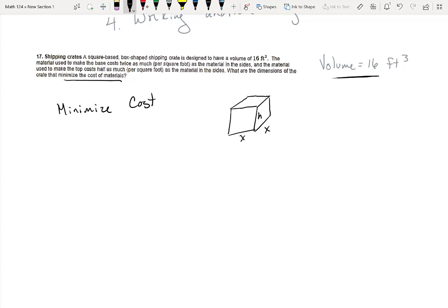So the top looks like this, x times x, right? The bottom also x times x, and each side, and there's four of them, looks like x times h, right? Okay, so the area of this is x squared.